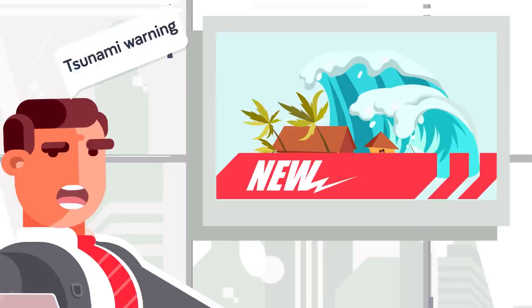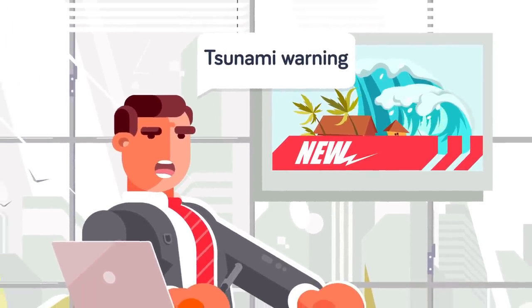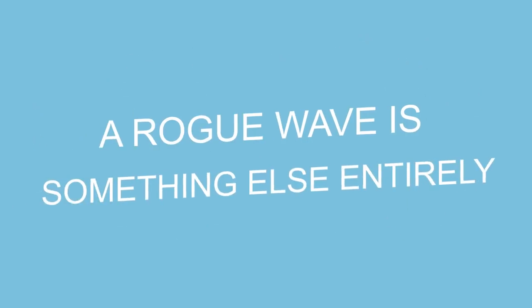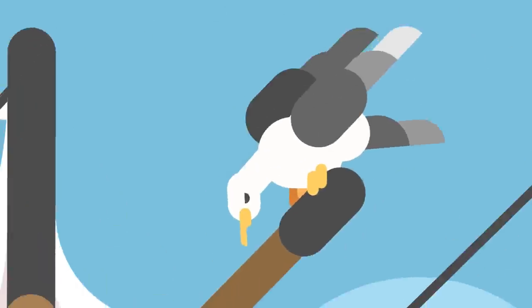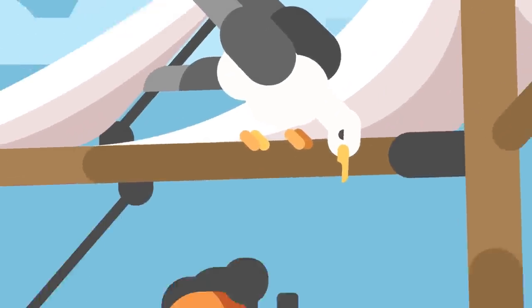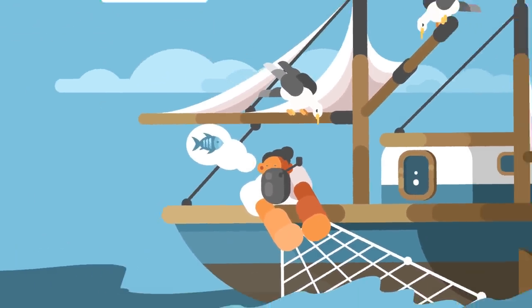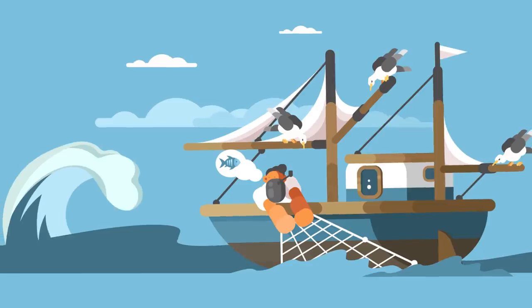Modern earthquake detection doesn't eliminate the threat from tsunamis, but it does provide some warning. A rogue wave is something else entirely. By definition it seems not to fit the prevailing wave conditions, spiking to three to six times the height of neighboring waves without a clear explanation for the abrupt change.